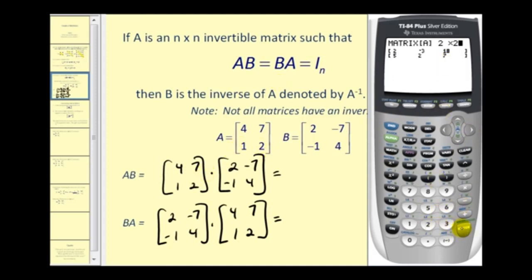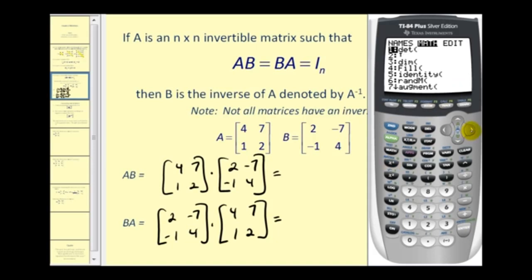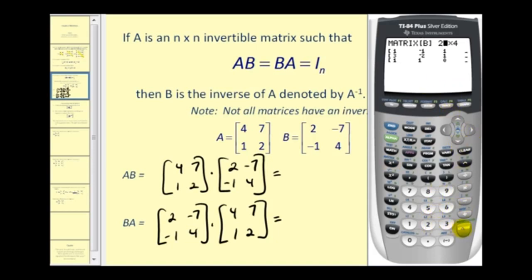It's a two by two matrix, and the elements are four, seven, one, and two. Now let's go ahead and enter in matrix B. Second matrix, go over to edit, and then down to matrix B. Again it's a two by two, and the elements are two, negative seven, negative one, and four.